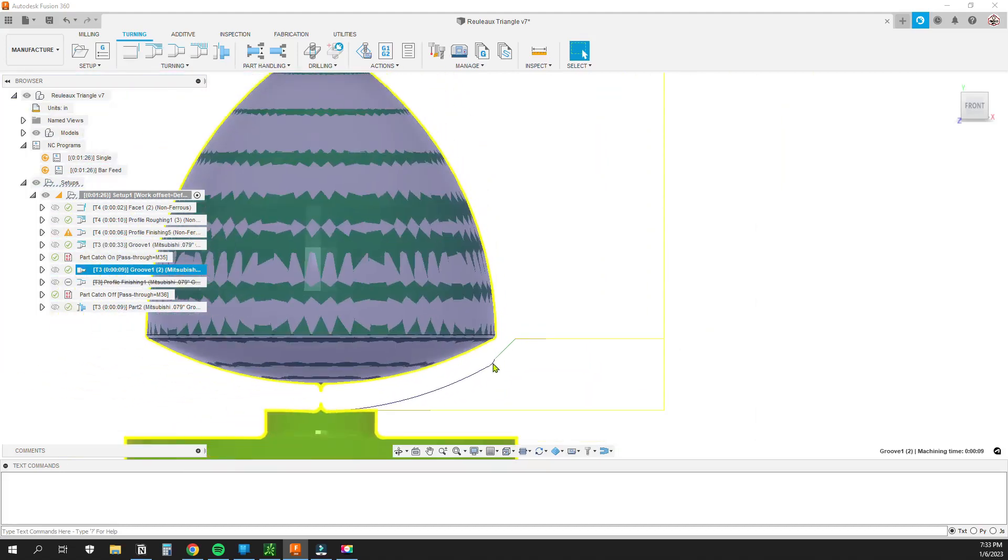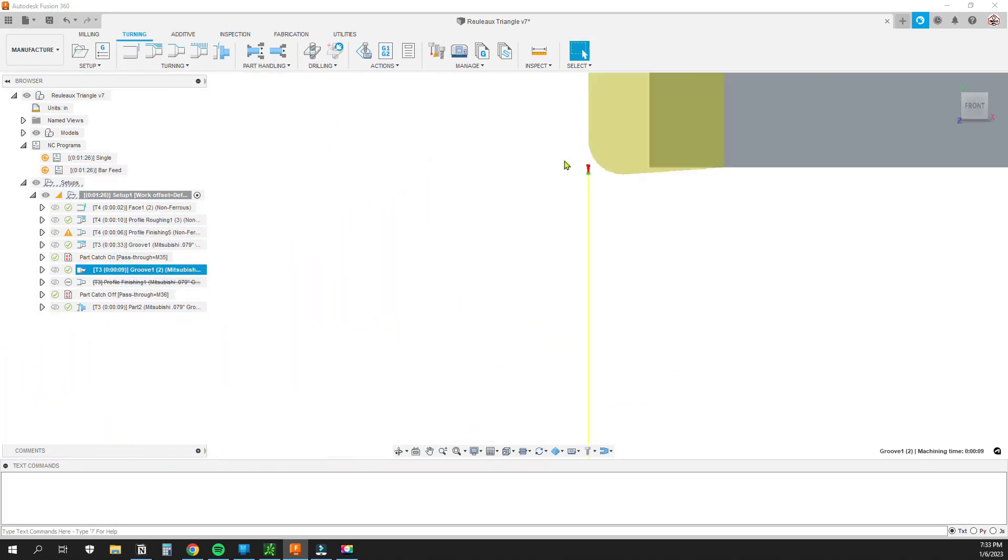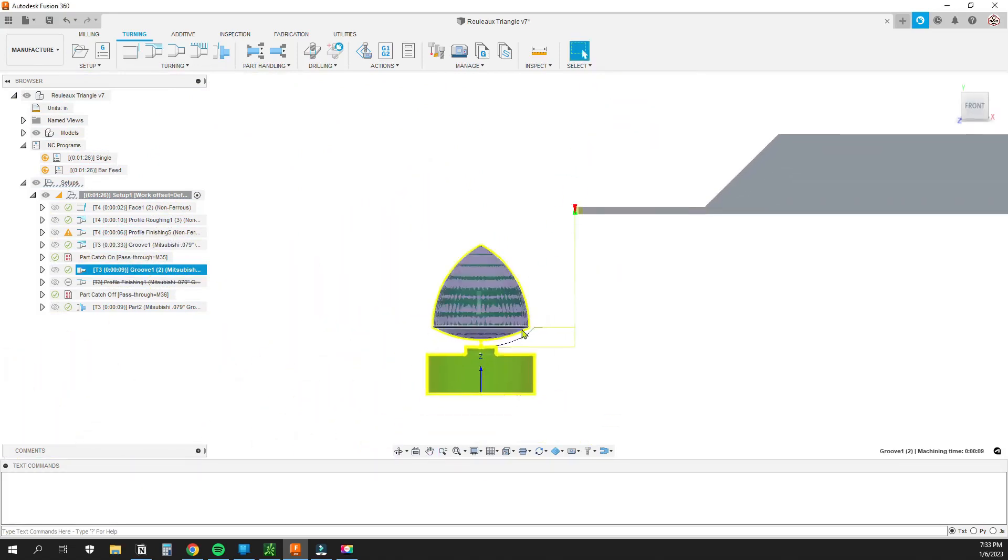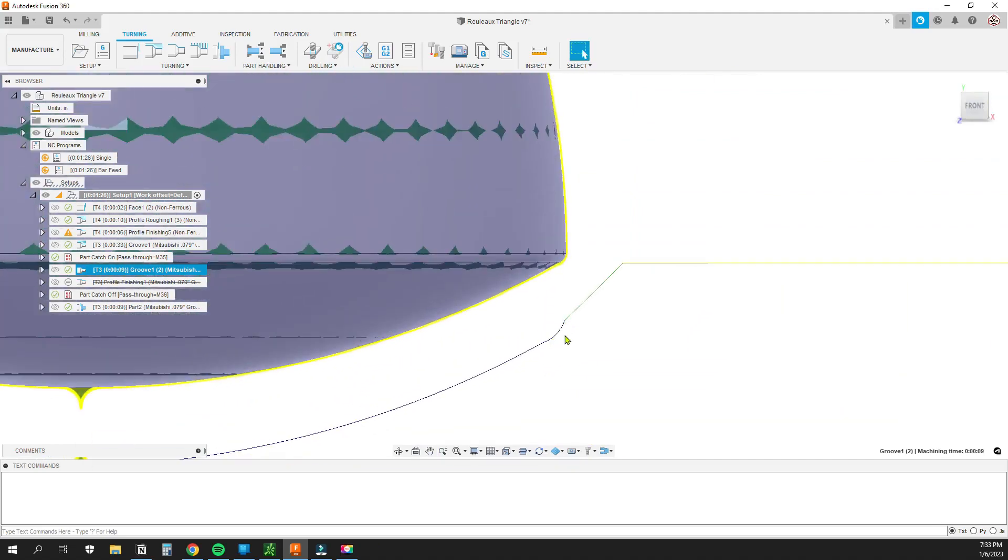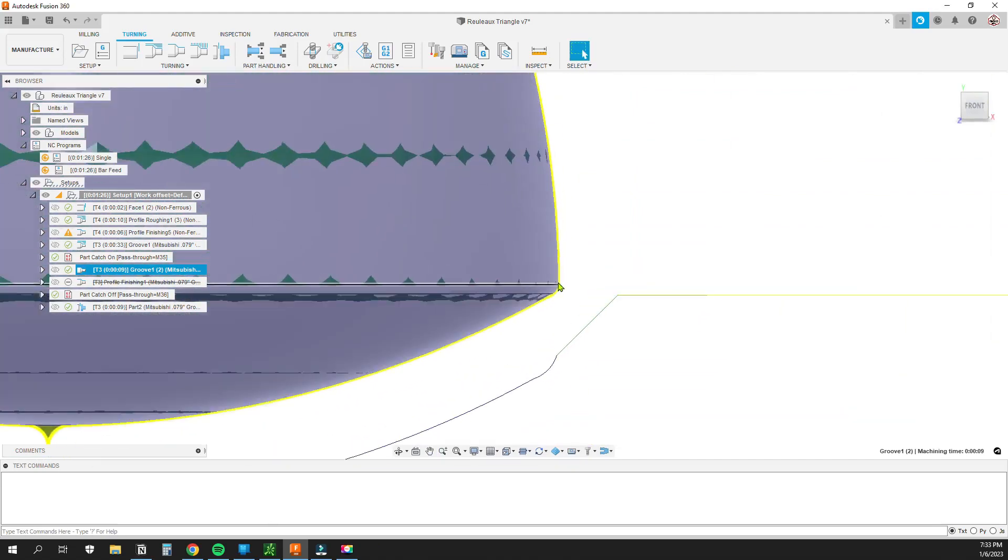The tool path looks odd but that's because it's using the back side. It's using this point right here on the back side of the tool as the point. So that's why it looks odd right here but it's just trying to get that little rounded edge.